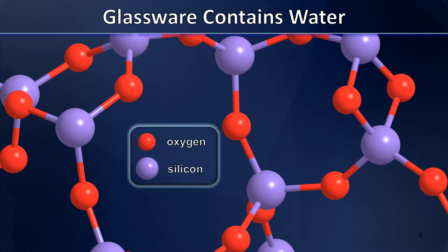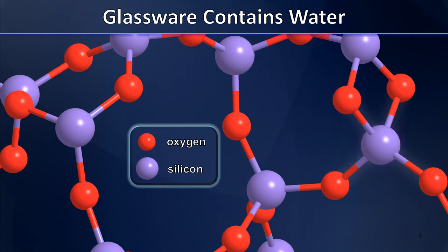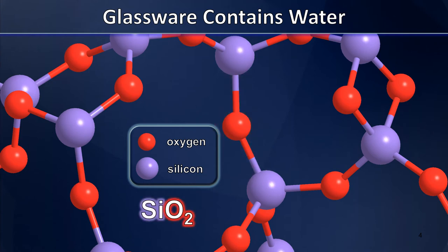In lab glass we also find things like sodium and boron, but I'm going to stick to the simplest possible representation here. Those silicon atoms are four-coordinate atoms — each one is bonded to four oxygens, and those oxygens are each bonded to two silicon apiece. What that means is that this glassware has a formula of SiO2, or so it would appear from inside the matrix of the glass.